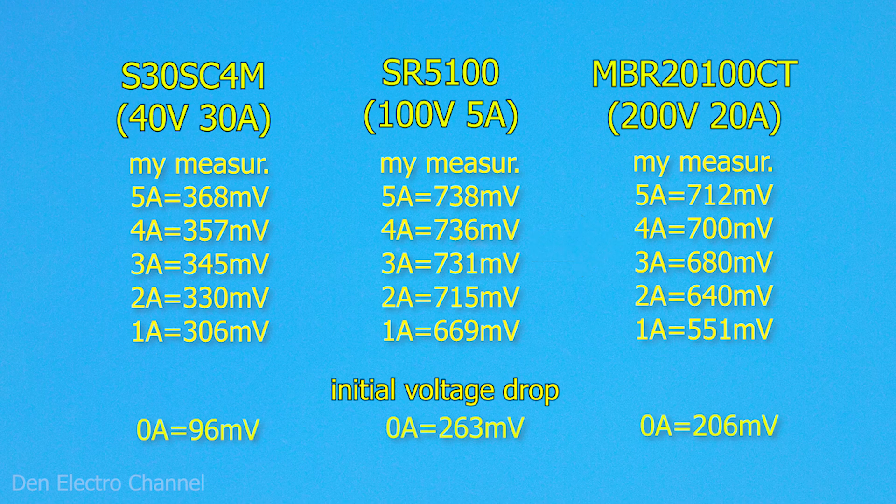From all this, we can assume that the higher the diode's operating current, the lower its voltage drop. But at the same time, its maximum operating voltage decreases.